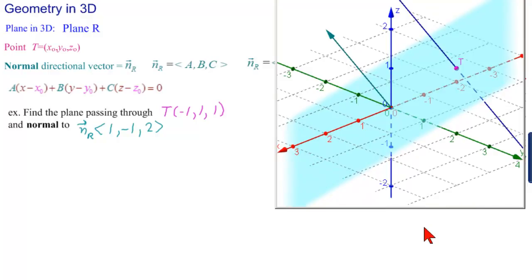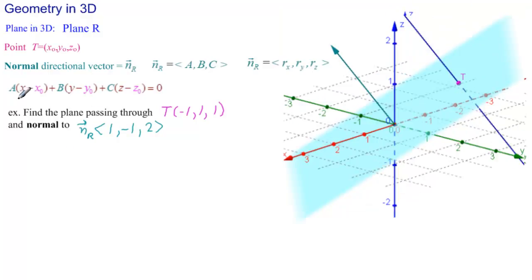Now let's get the equation of the plane. So we have to start with the components of the normal vector. So 1, and then minus 1, and plus 2, A, B, and C. Then we have X minus, Y minus, and Z minus, equal to 0. And now we put our point in, which is minus 1 here. So this becomes plus 1, 1, and 1 here. And so when we clean this up, we get X plus 1 minus Y plus 1 plus 2Z minus 2 equals 0.